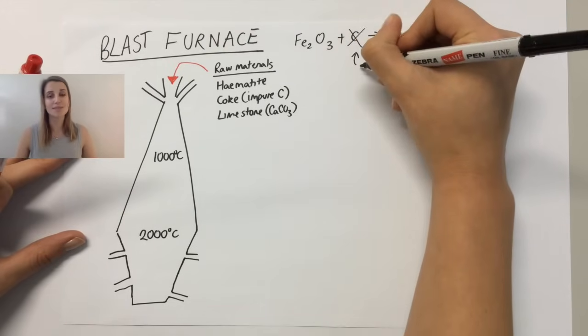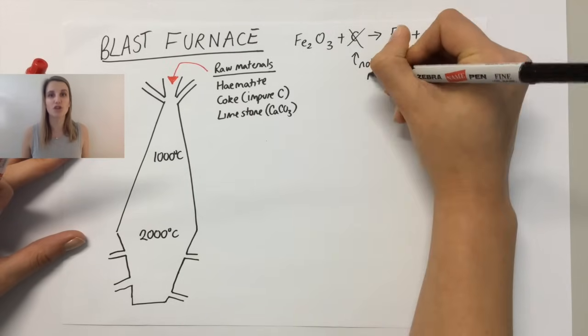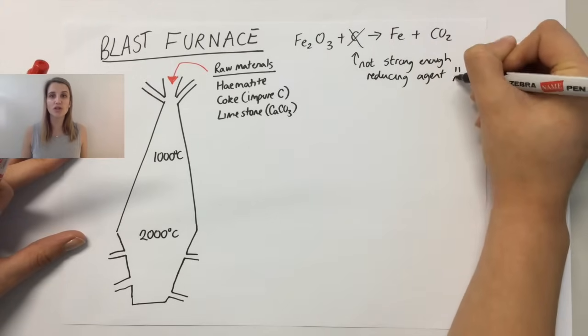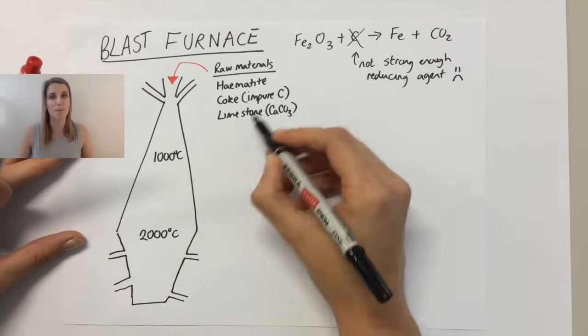Now sometimes this happens, but most of the time the carbon isn't a strong enough reducing agent. That means that it's not strong enough to pull the oxygen away from the iron. The iron has too tight of a grip on it.